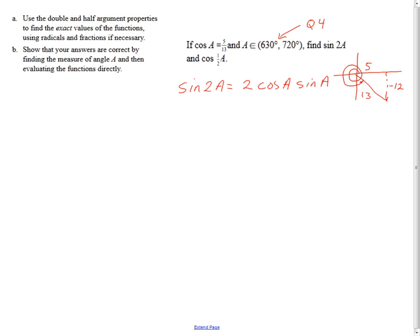Okay. So now I know that there's a 2, and the cosine of a is 5 thirteenths, and the sine of a is negative 12 thirteenths. And I multiply those things together, and that's 10, negative 120, over 169. That's the exact value of the sine of 2a. We will show that on a calculator in a second.